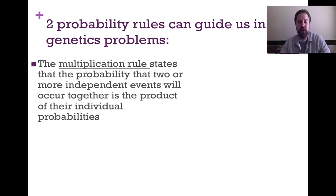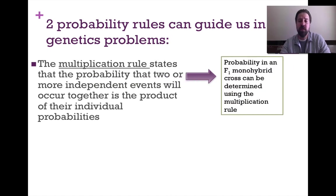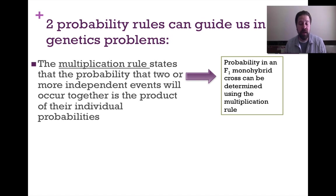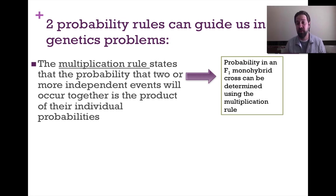The first one is the multiplication rule. It simply states that the probability of two or more independent events occurring together is the product of their individual probabilities. We can use that to determine the probability of a monohybrid cross — looking at the probability of one thing happening on one axis, crossing it with the probability from the other axis, to get an overall probability of that event occurring.